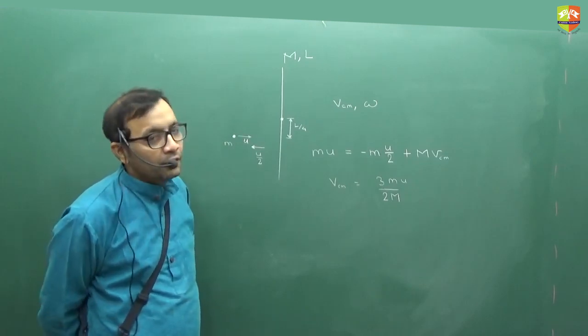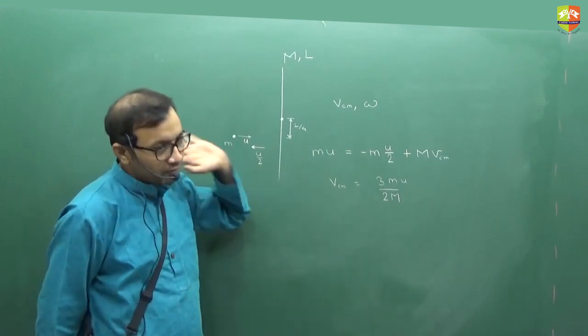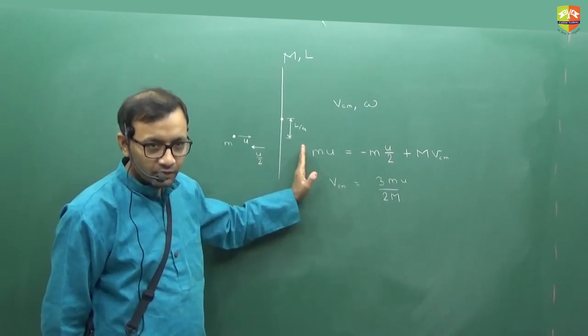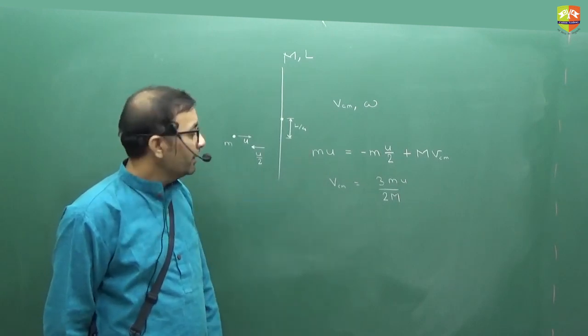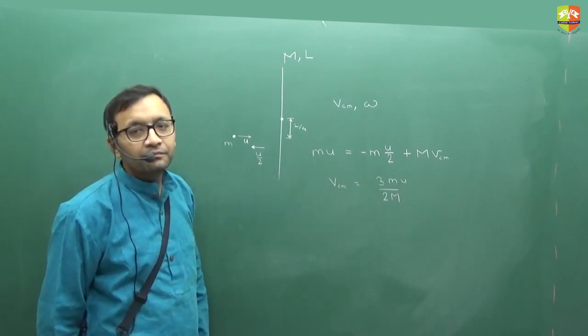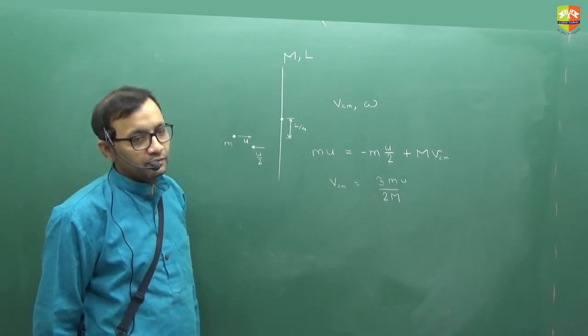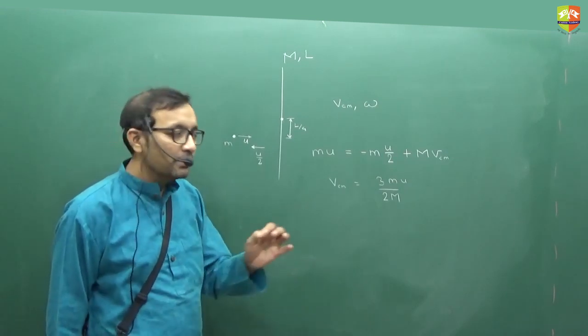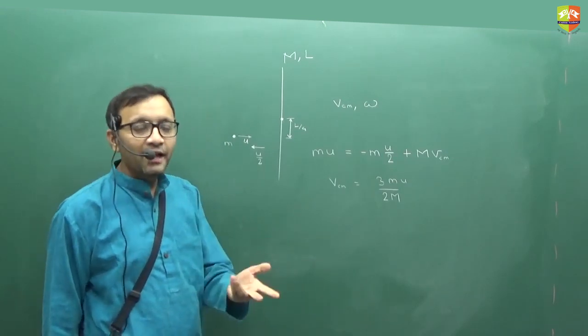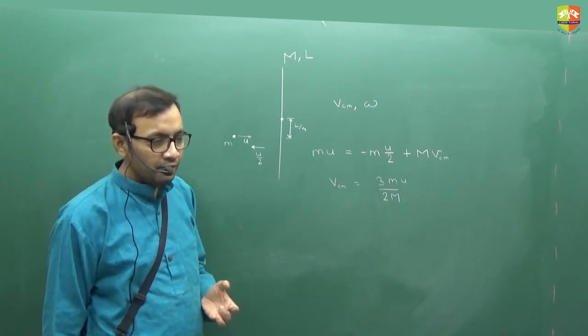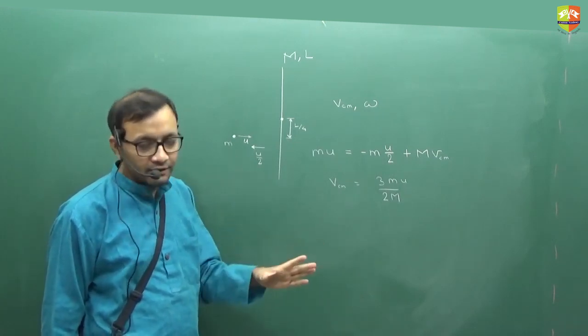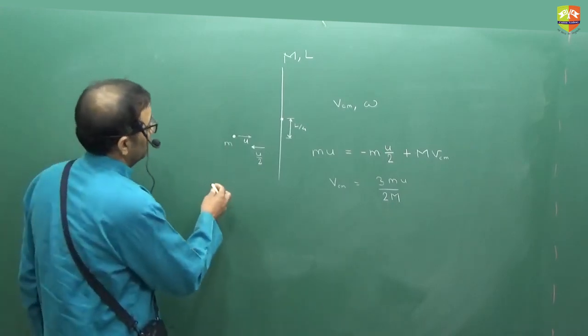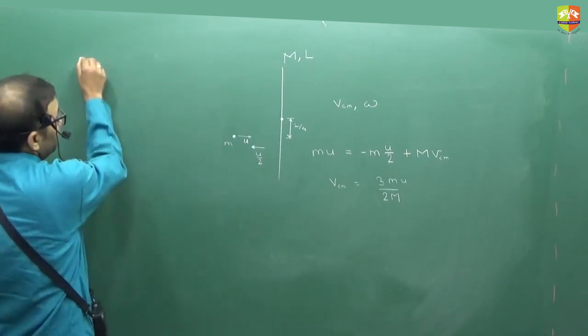At times whenever we learn something new, we forget that we can apply whatever we have learnt earlier. So this we haven't learnt in this chapter. This we already know, conservation of linear momentum. Now can I use conservation of angular momentum? About which axis? About any axis I can use. But centre of mass will be the easiest one to apply because about centre of mass, angular momentum is ICM. I can literally use about any axis. About any axis torque is 0.